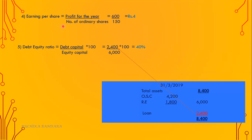Number four: earnings per share equals profit for the year divided by number of ordinary shares. Profit is 600 divided by 150,000 shares — earnings per share is 4 rupees. Number five: debt equity ratio equals debt capital over equity capital, into 100. Equity capital is 6,000. Total assets are 8,400, so the missing figure (loan/debt capital) is 2,400. The answer is 40%.